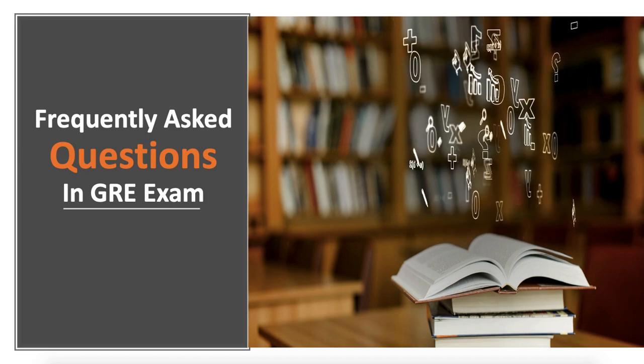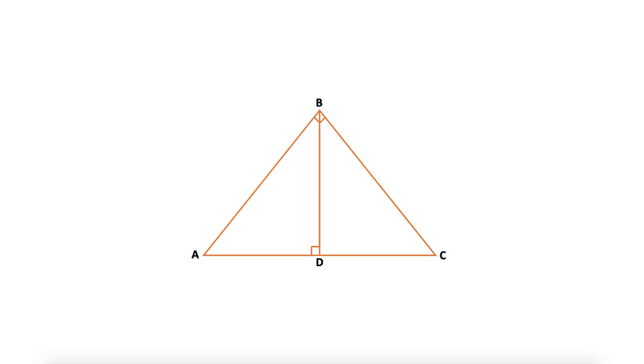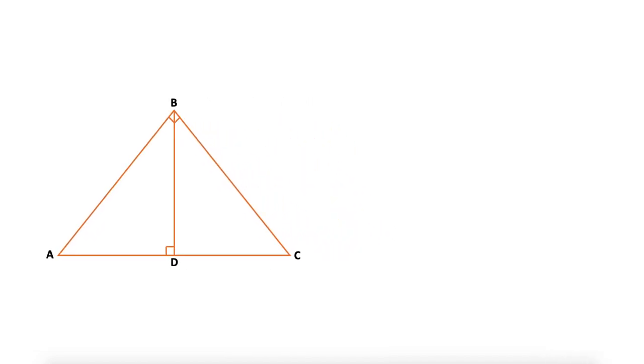This is the first video of the series that involves a triangle. This shape is highly tested these days and often gets wrong by students. The reason is they assume BD as an angle bisector, but in two-dimensional geometry we can't assume anything unless specified because the figure is never drawn to scale.